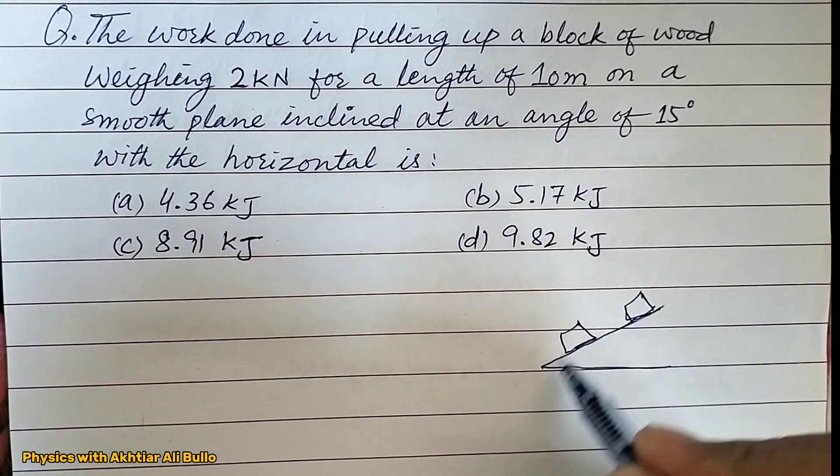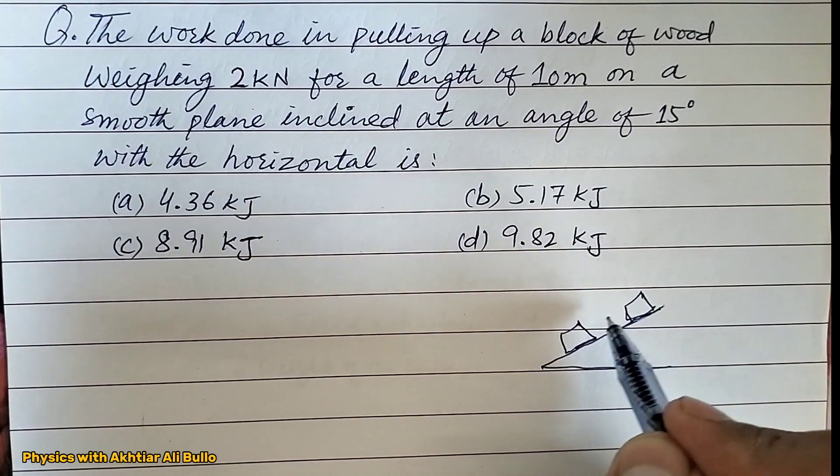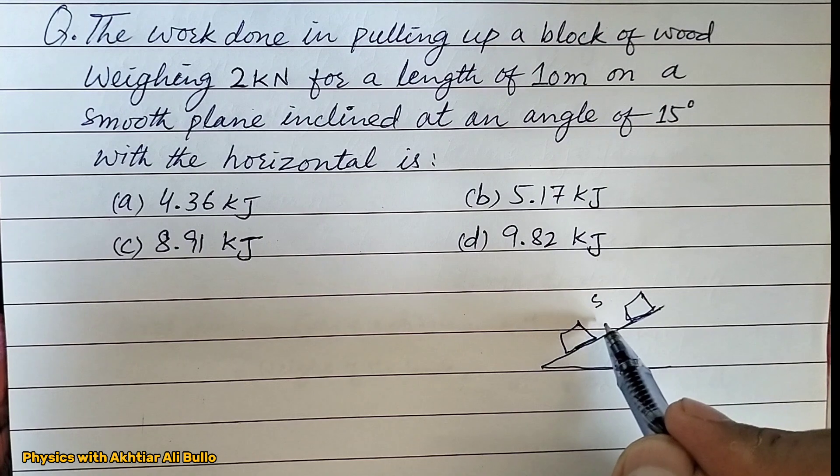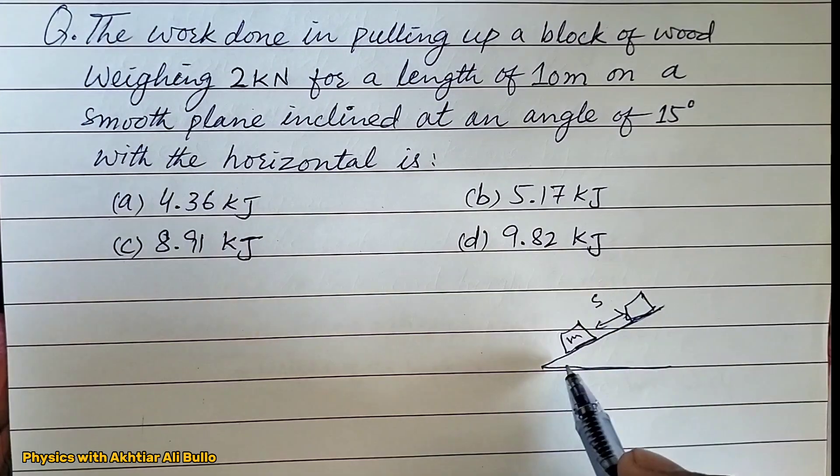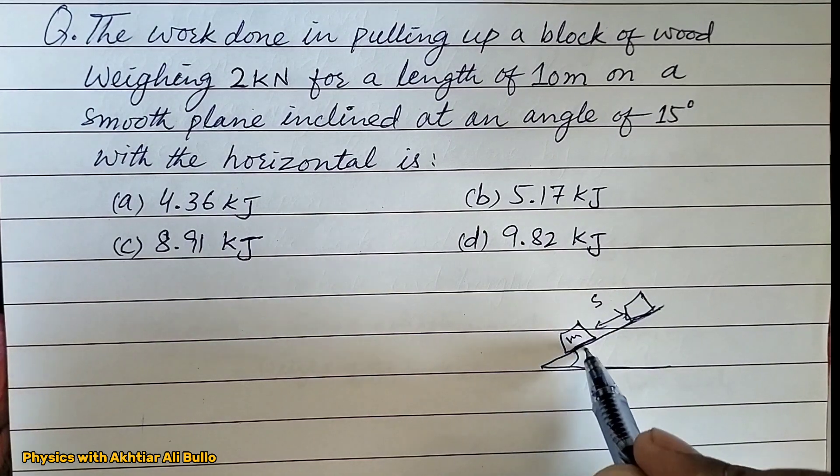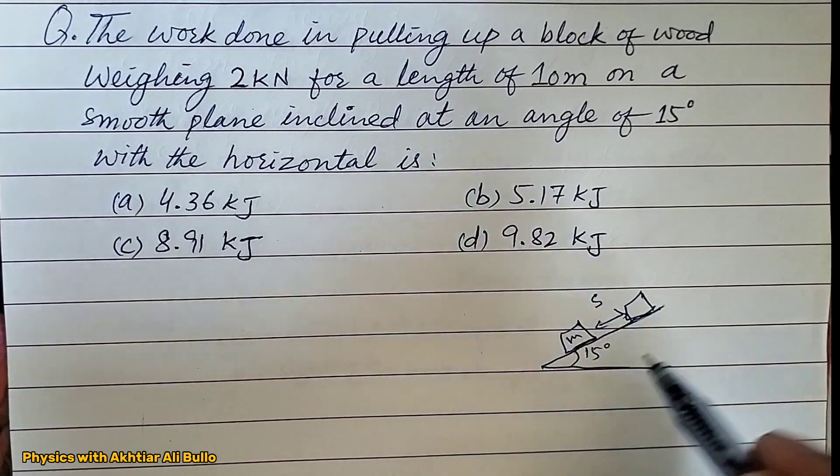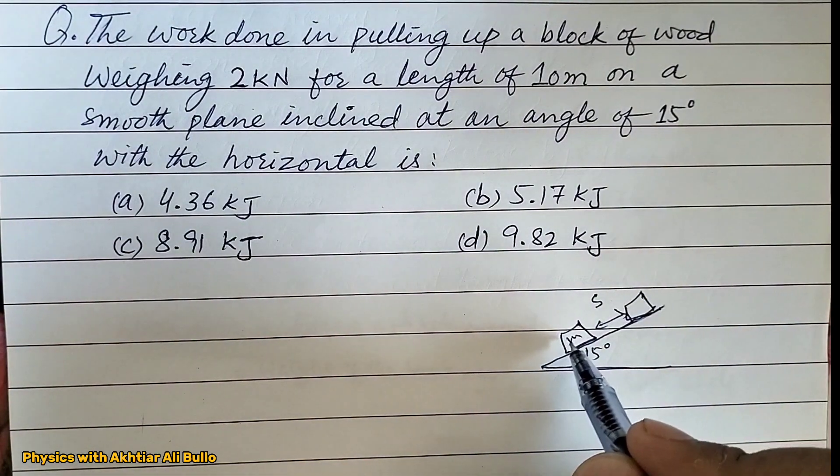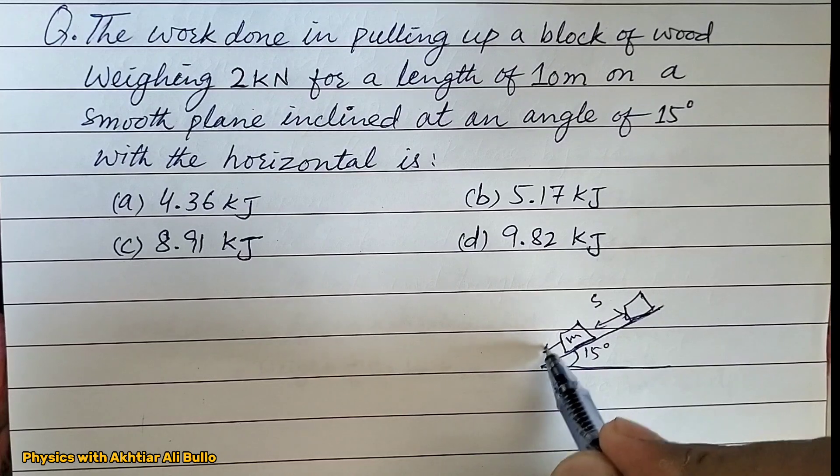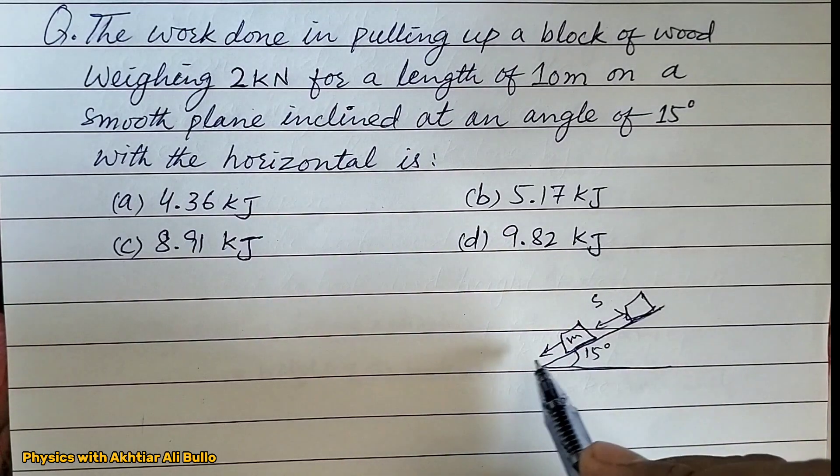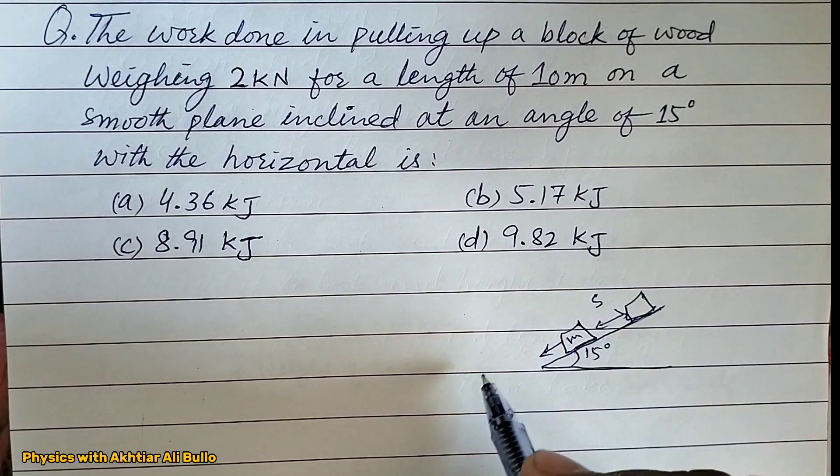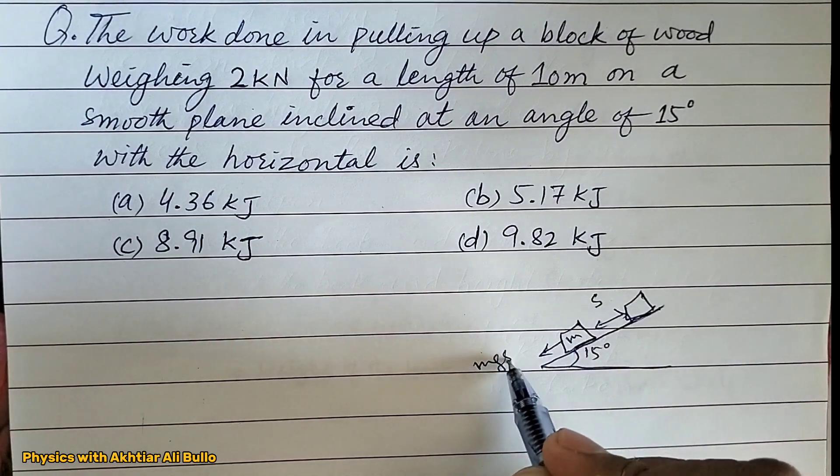When it comes down, it covers some distance. The angle is 15 degrees, so the block is moving down due to the parallel component of weight, which means mg sin theta.